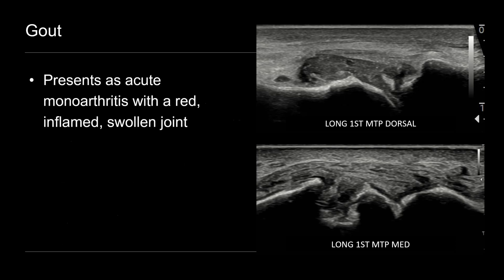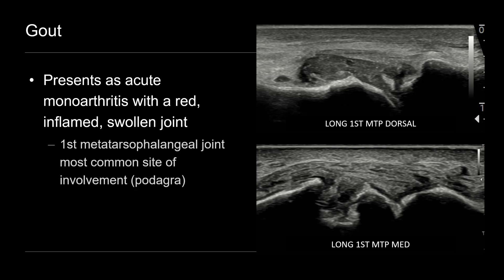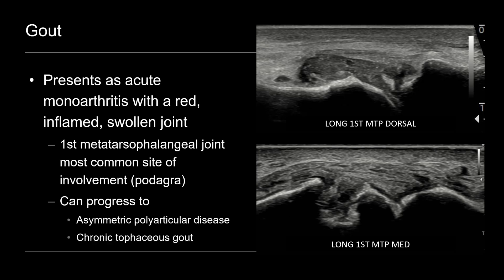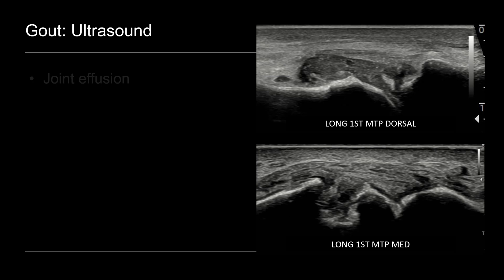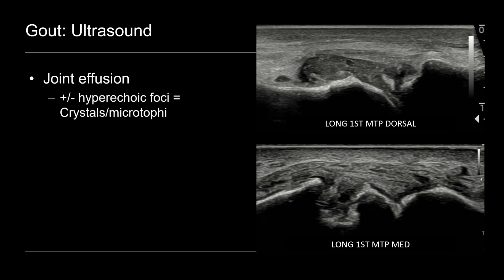Clinically, these patients often present with an acute monoarthritis with a red, inflamed, and swollen joint. This is most commonly at the great toe at the first metatarsophalangeal joint, and when that occurs in isolation it's sometimes known as podagra. This can eventually progress to asymmetric polyarticular disease, meaning multiple joints can be involved, and then chronic tophaceous gout can occur. On ultrasound, we typically see joint effusions, which are often complex and may contain punctate echogenic foci representing crystals or microtophi.